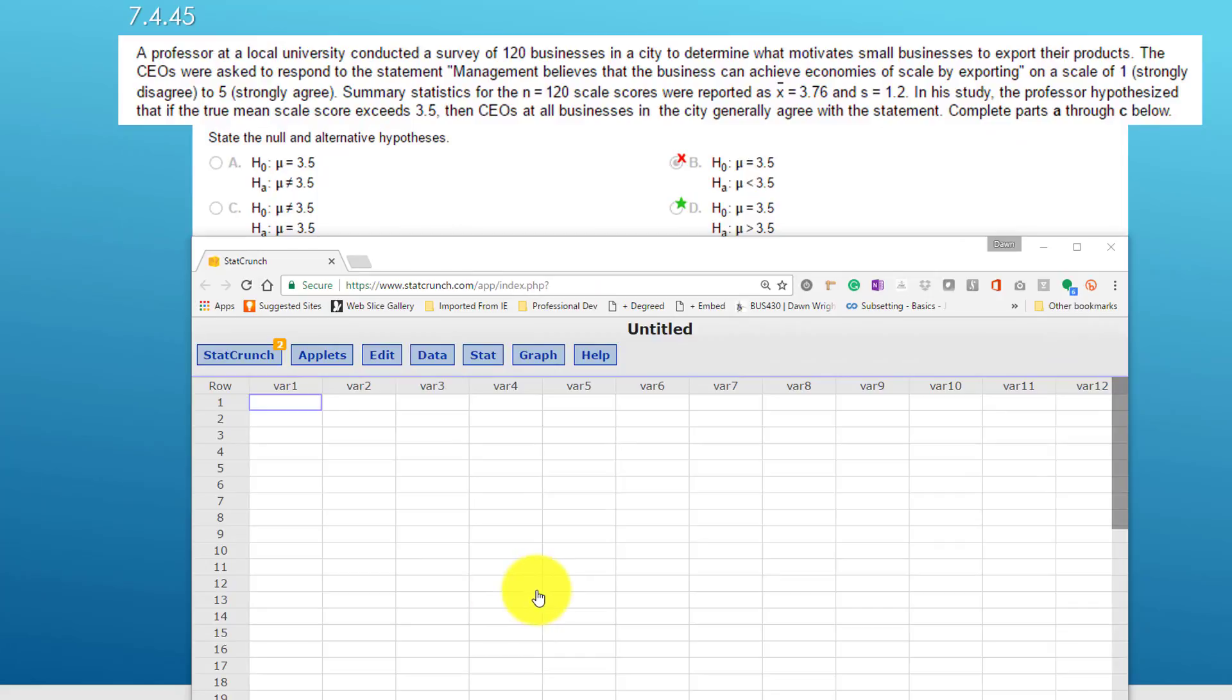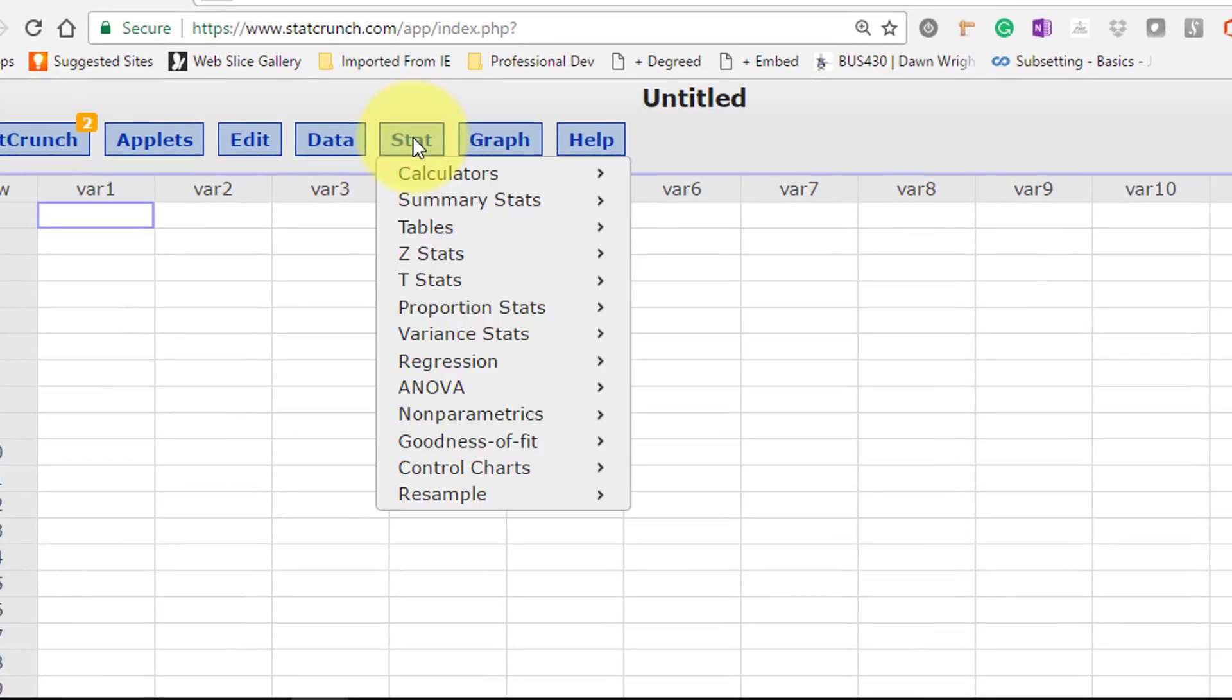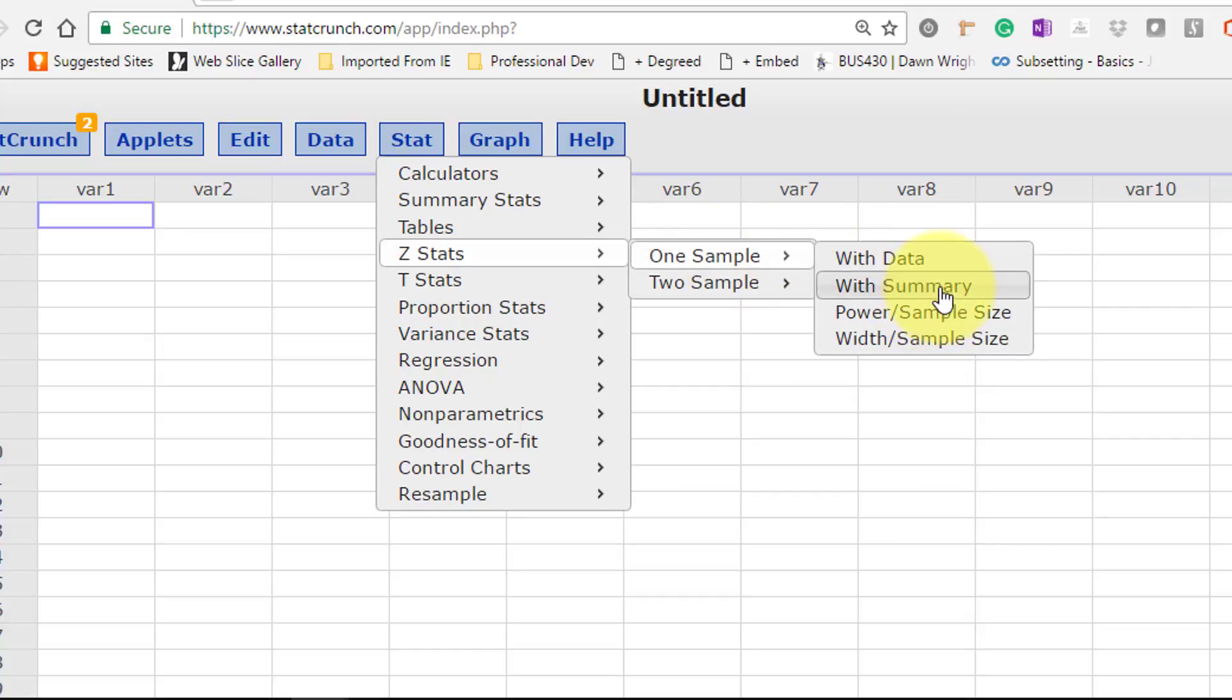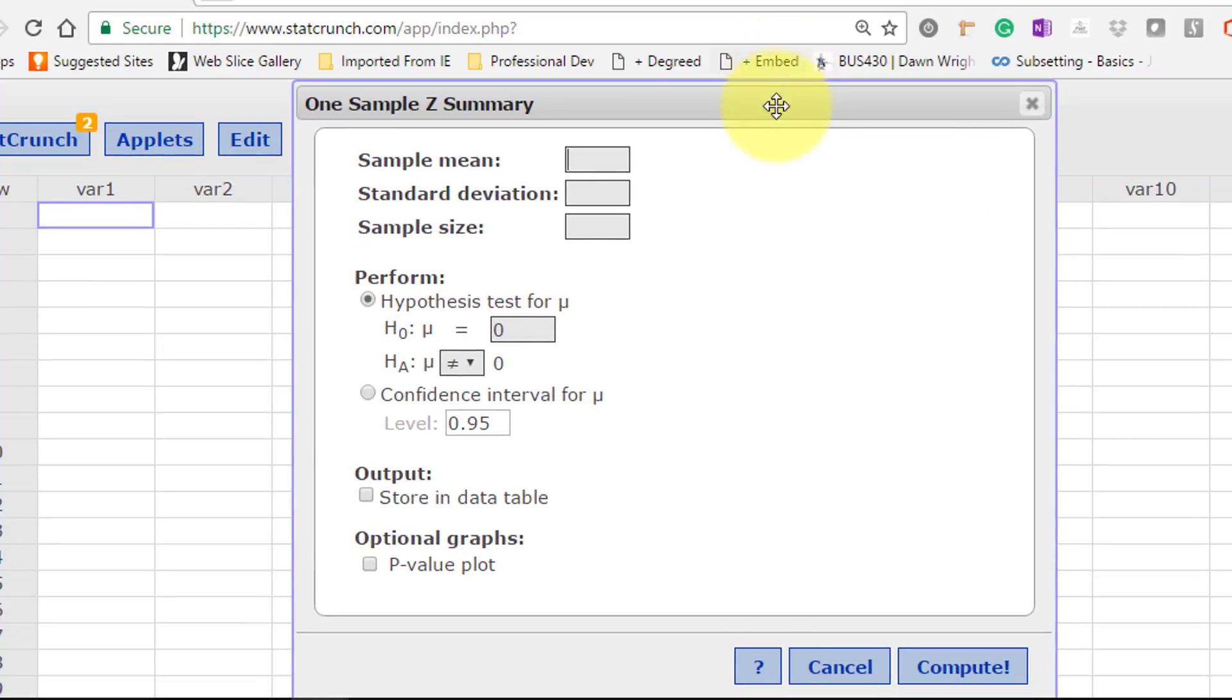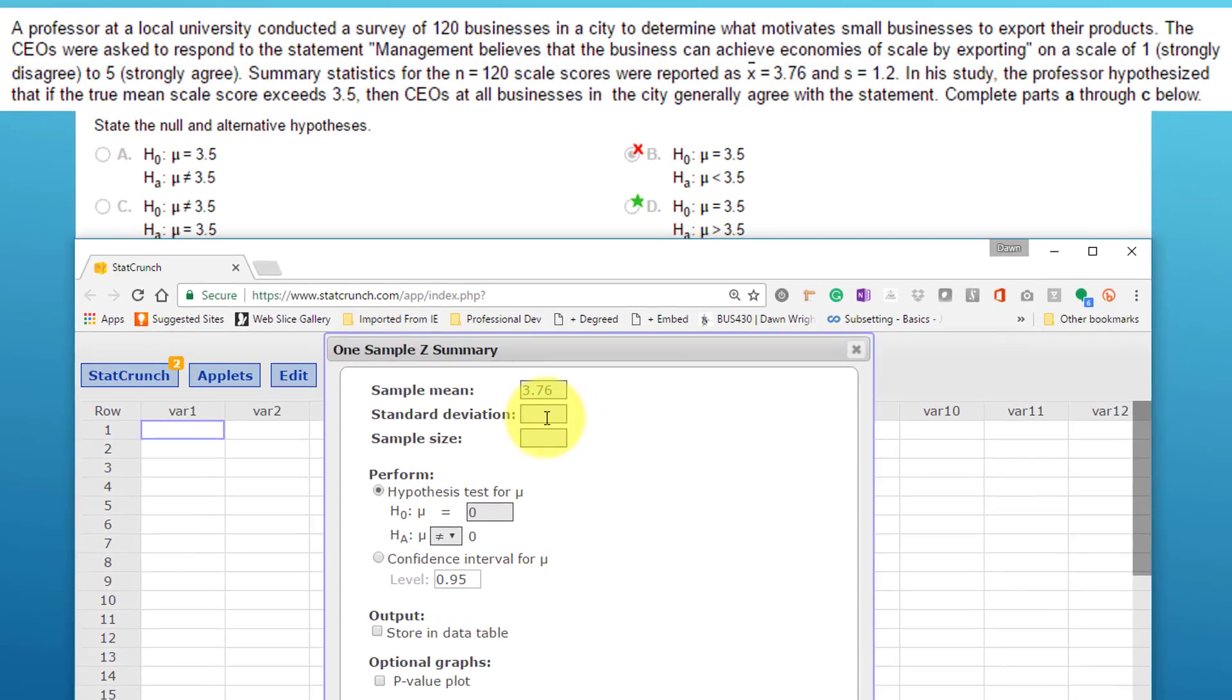I've opened StatCrunch, and let's solve this thing. We're going to go with Stat, which is always the smartest place to go. There's Z Stats. We know this is a z-test. It's one sample, and we have summary data. We open up this dialog box, and the first thing we have to put in is the sample mean. That's x̄ = 3.76. Now we've got to put in the standard deviation.